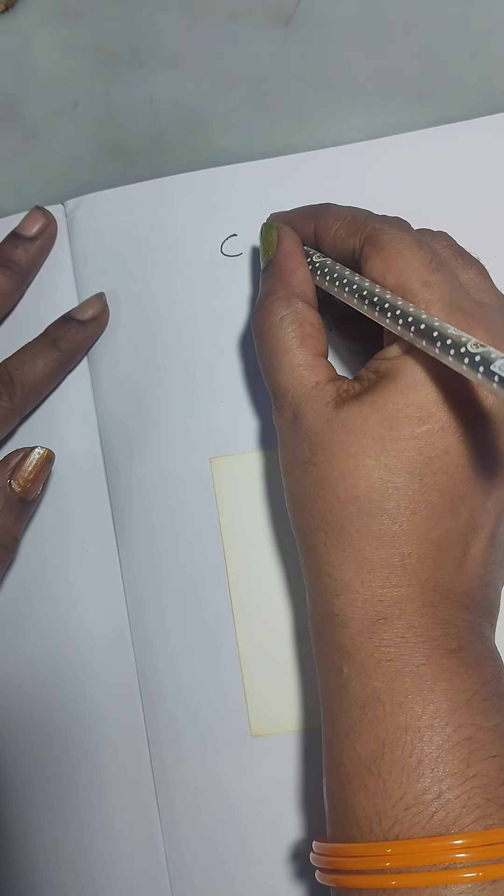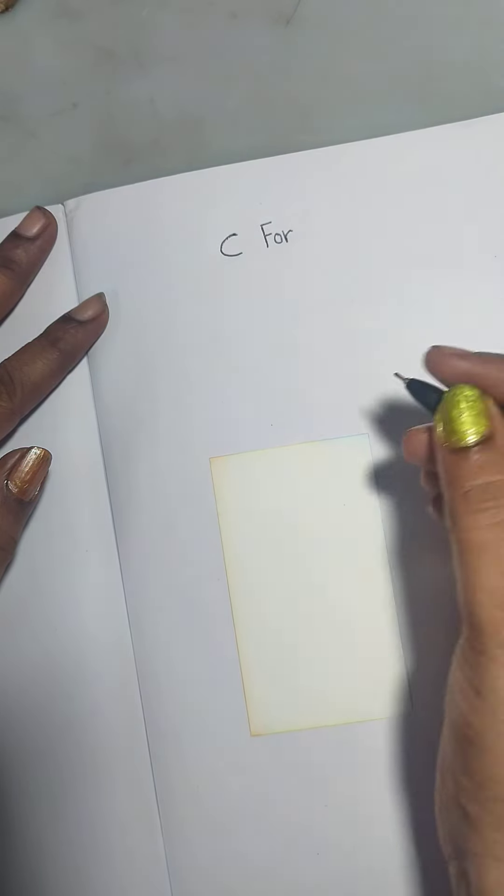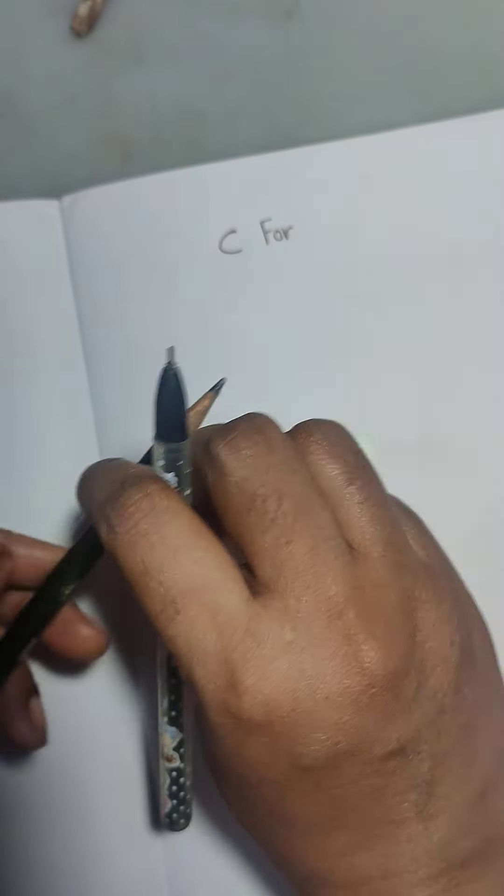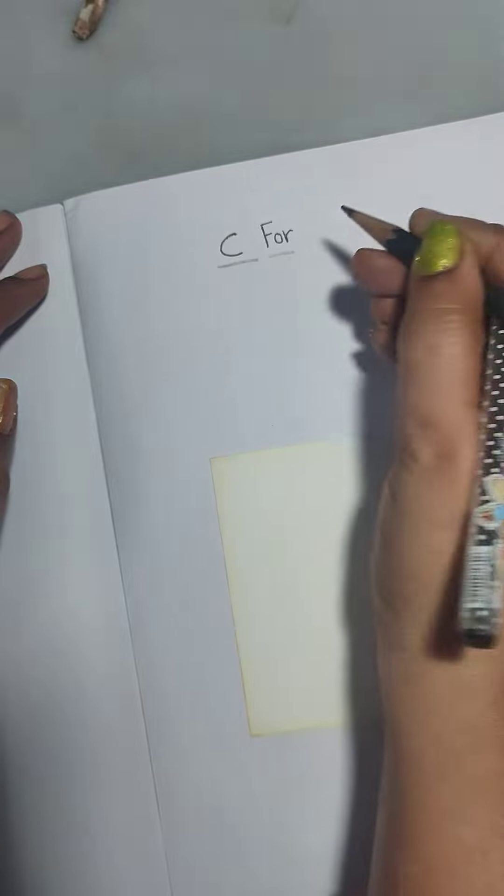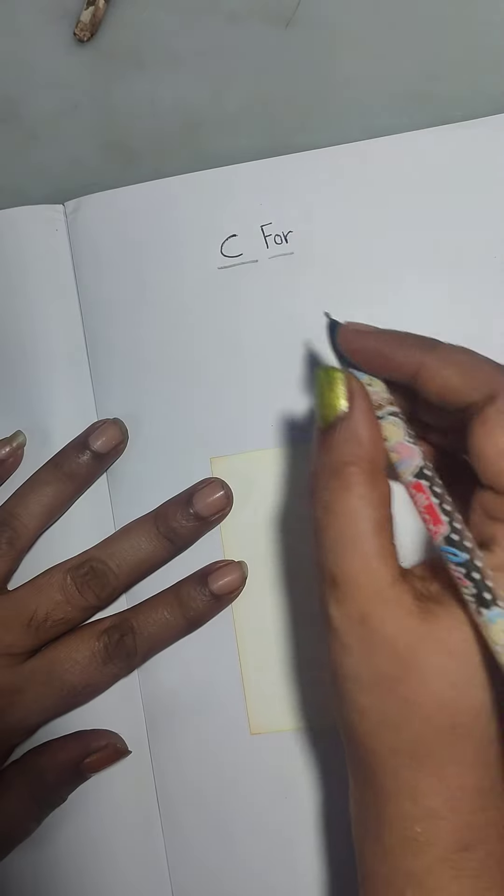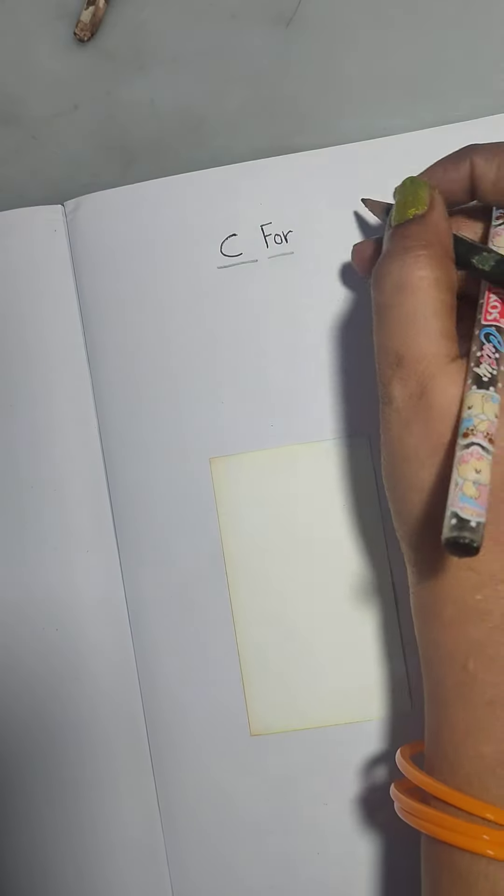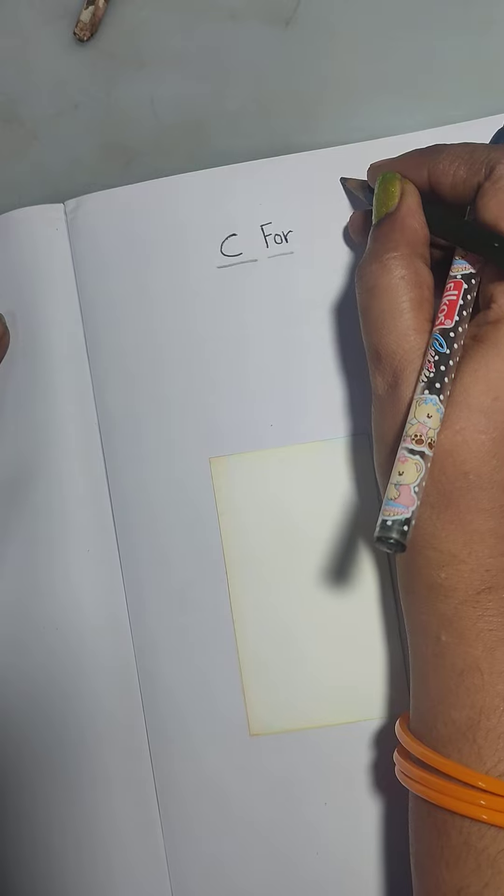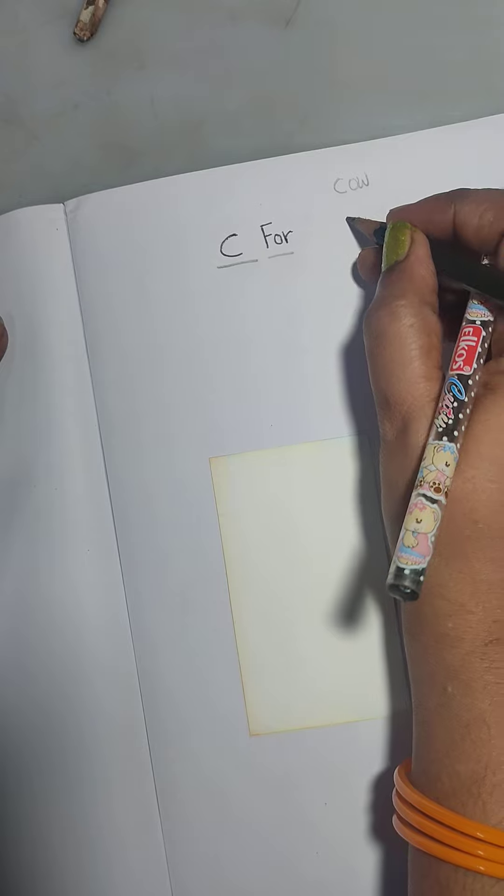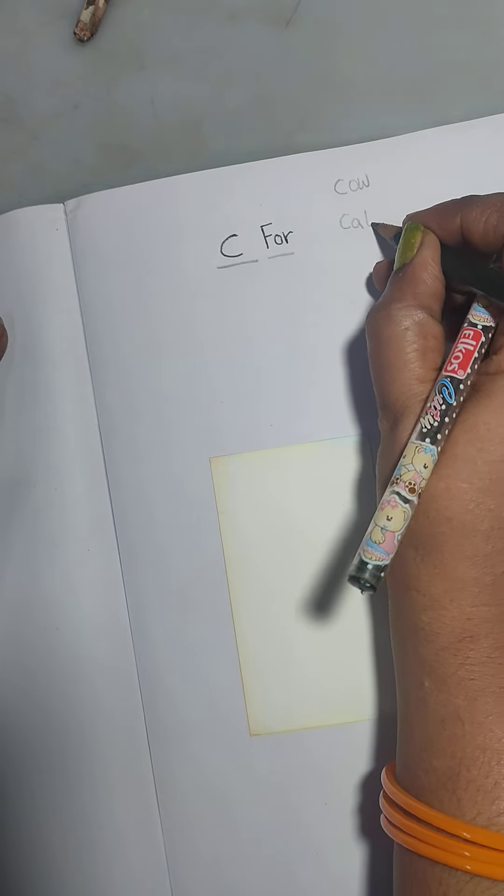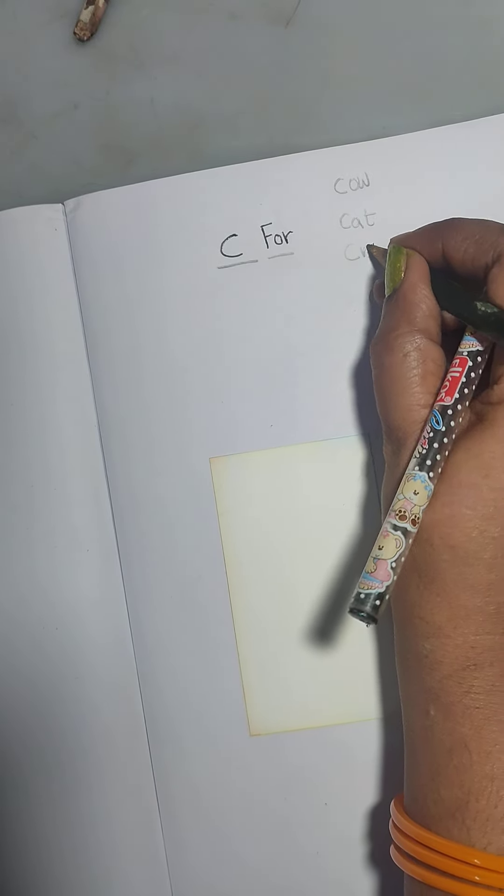C for. Come on say with me. C for. C for. Which art do we have to do today? C for. C for. Cow. Cat. Crab.